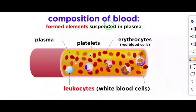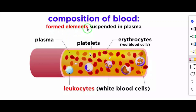Composition of blood. The blood consists of two main components: formed elements and plasma. Plasma is the liquid part, and the formed elements are blood cells. These formed elements are suspended — meaning floating — in plasma. The blood cells are platelets, erythrocytes and leukocytes, and they are known as formed elements.